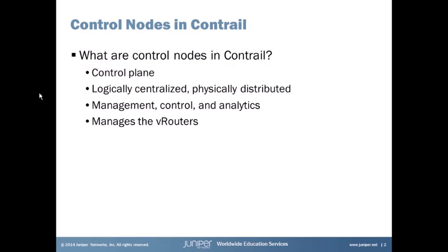The control node has many duties. It reflects routes between the vRouters and possibly a gateway router through BGP and XMPP. It also sets up and controls networking information with the vRouters. It manages the vRouter — the forwarding plane. That's what a centralized controller does in any software-defined networking situation: it handles all the control functions and then gives directions to the distributed forwarding plane, which in this case are the vRouters.